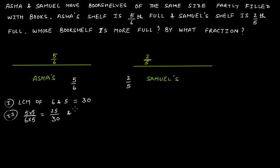It's very important to write the complete statement whenever you are solving any questions, because your course and your exam will demand it — otherwise your marks will get deducted. Now, what will be the equivalent fraction of 2/5 such that the denominator becomes 30? Multiply the denominator by 6 to get 30, and also multiply the numerator by 6, giving us 12. So 2/5 becomes 12/30.